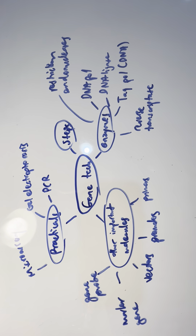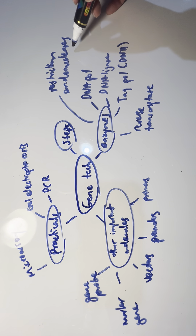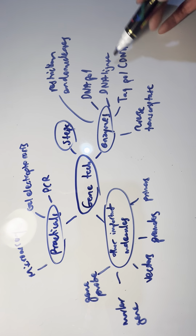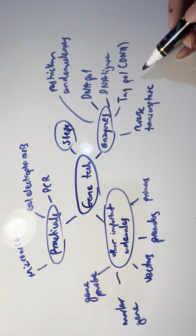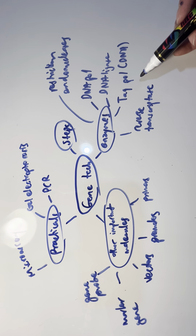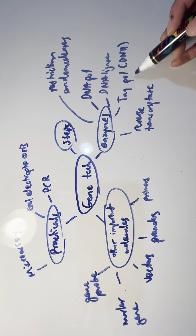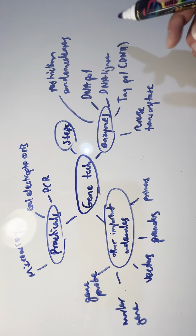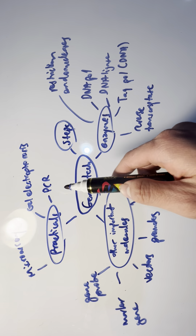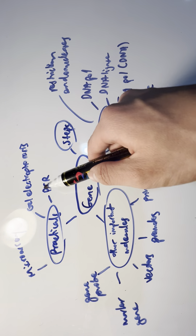First, let's go through the enzymes. We've got restriction endonucleases, DNA polymerase, DNA ligase, and Taq DNA polymerase — which is a type of DNA polymerase that is thermally resistant and is used in PCR (Polymerase Chain Reaction), which I'll be covering later in the video.